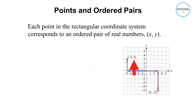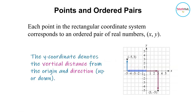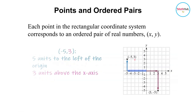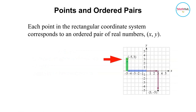The second number is called the y-coordinate, and this y-coordinate denotes the vertical distance and direction parallel to the y-axis. If this is positive 3, it means 3 units above the x-axis. So this is the point corresponding to negative 5, 3.